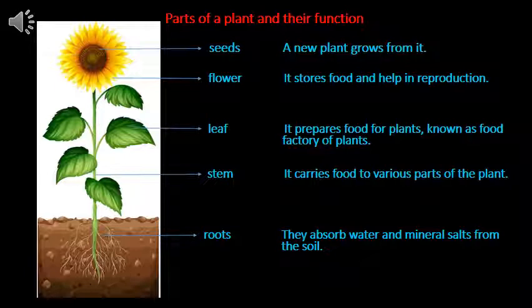Leaves are known as the food factory of a plant. Leaves have a green substance called chlorophyll. They also have tiny pores or holes called stomata. The process of preparing food by the leaves is called photosynthesis.